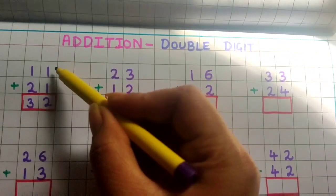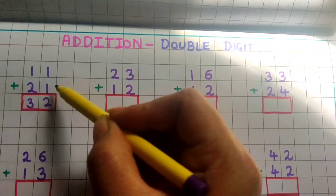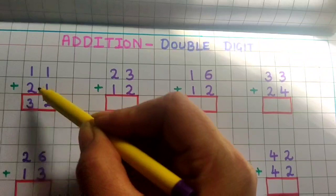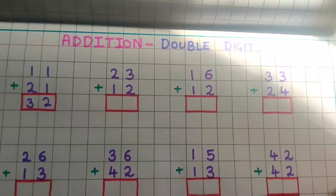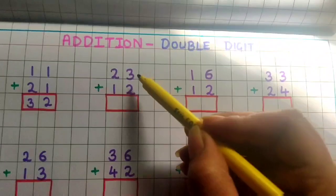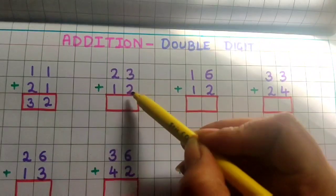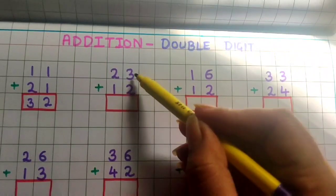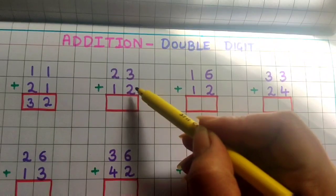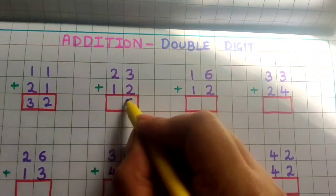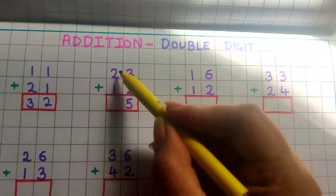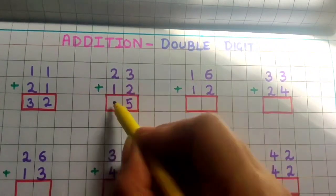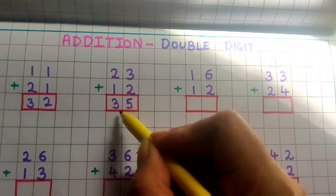First we will do the addition of the numbers present in the ones place, and then we will do the addition of the numbers present in the tens place. Ok children, now let's do the next problem: 23 plus 12. First we will do the addition in the ones place — 3 plus 2 is 5, so I will write here 5. Then 2 plus 1 is 3. So the answer is 35.